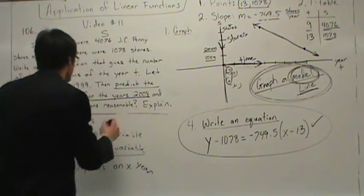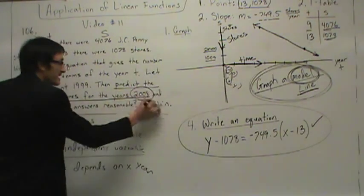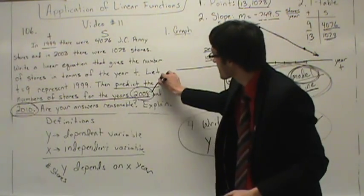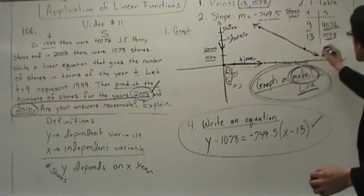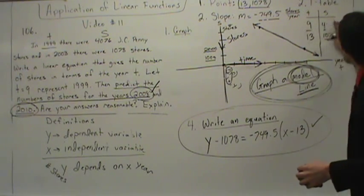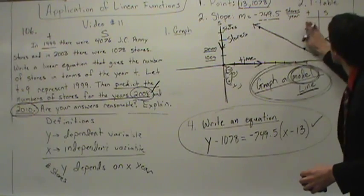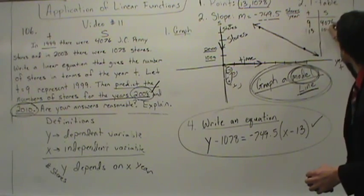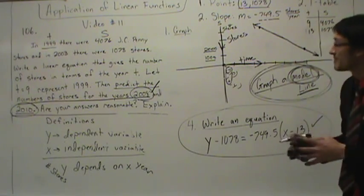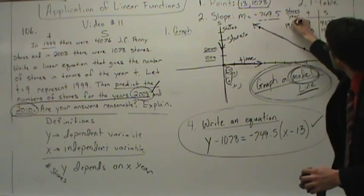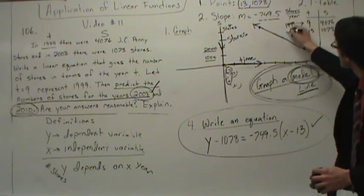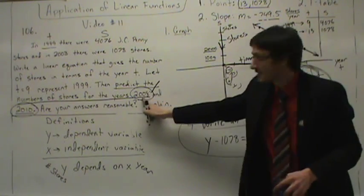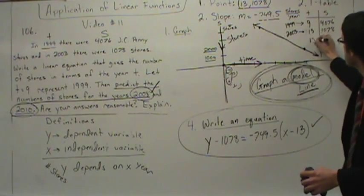It says: predict the number of stores for the years 2008 and 2010. To make a prediction, we're going to use the model — this equation represents the line. For year 2008: we said 9 is 1999, and 2003 was 13. So 2008 would be 18. What value is 18? It's a T value.